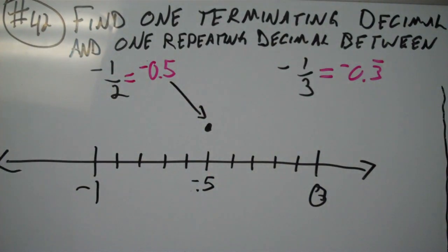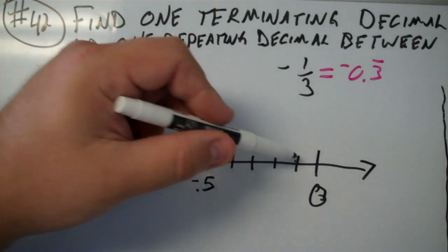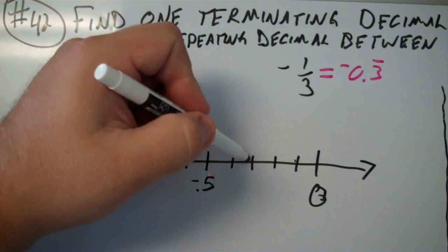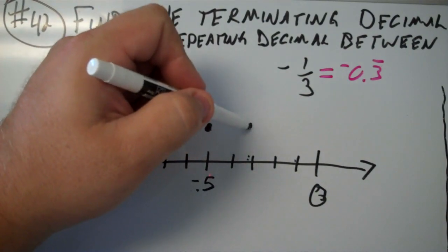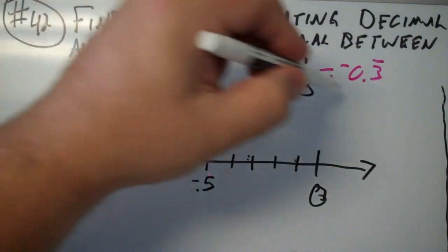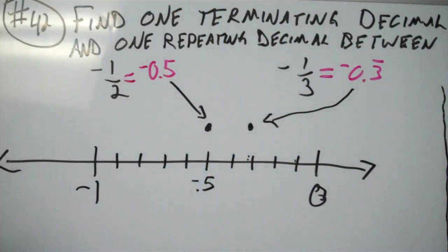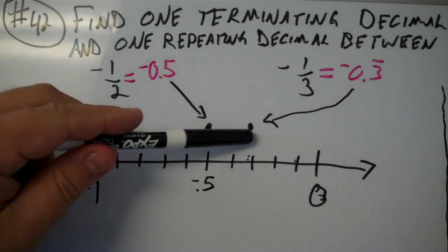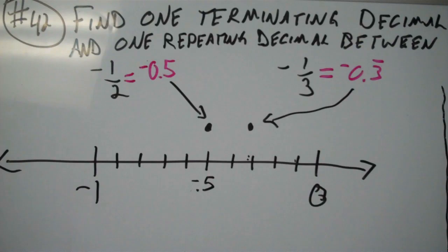Negative 0.33, well, there's negative 0.1, 0.2, 0.3. Negative 0.33 should be right around here, approximately. So that's where this number would be. So let's look at the numbers that are in between there. We have negative 0.33 up to negative 0.5.